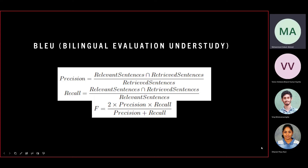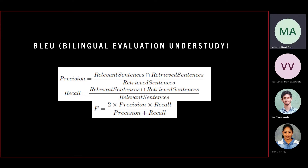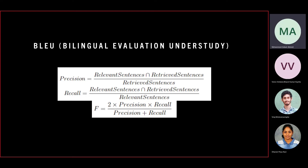The first one is BLEU, which stands for Bilingual Evaluation Understudy. It is an algorithm which evaluates the quality of the text output. BLEU shows how much the words in the machine generated summaries have appeared in the human reference summaries. With the concepts of BLEU, we can calculate precision and recall.